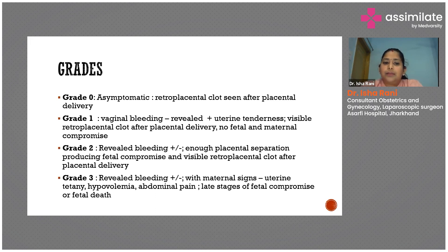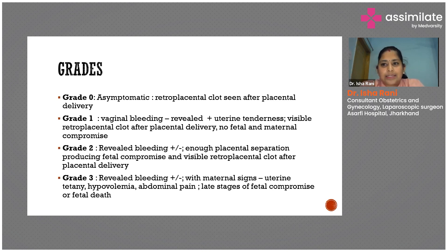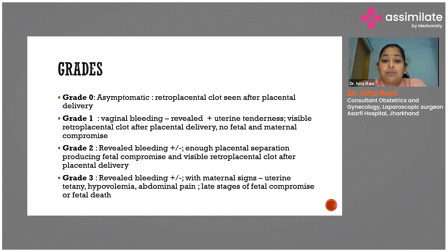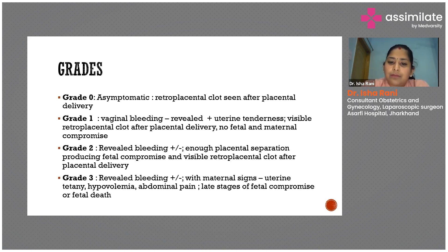In Grade 2, bleeding may or may not be present, and placental separation is severe enough to cause fetal compromise, which can be seen on CTG as decreased variability or decelerations. There will also be a visible retroplacental clot after placental delivery. In Grade 3, bleeding may or may not be present, there will be obvious signs of fetal compromise or fetal death, and maternal signs of hypovolemia will also begin to appear.